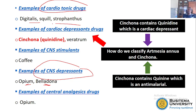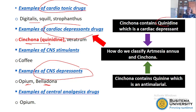Another example would be cardiac depressants — drugs that depress the heart or cardiac system. For example, we have cinchona, which contains quinine. The active ingredient quinidine depresses the cardiac system. However, sometimes it is difficult to classify some drugs because some drugs play more than one role. For example, cinchona plays a role as a cardiac depressant because of quinidine, but it also contains quinine, making it an antimalarial.